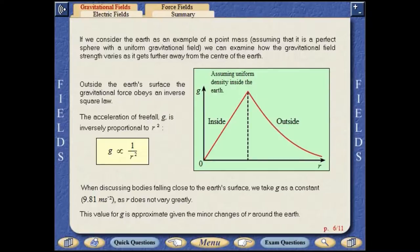When discussing bodies falling close to the Earth's surface, we take g as a constant, as r doesn't vary very much. This value for g is approximate, given the minor changes of r around the Earth, and is known as the acceleration of freefall.